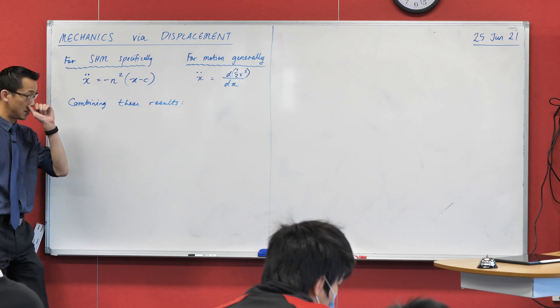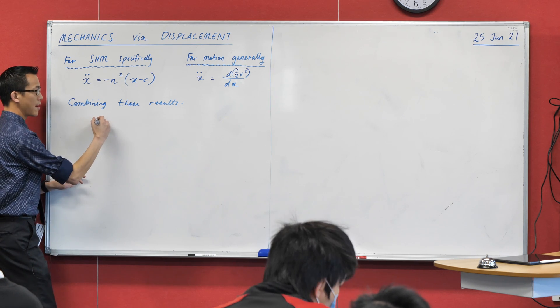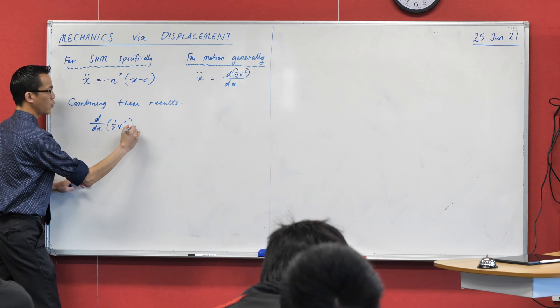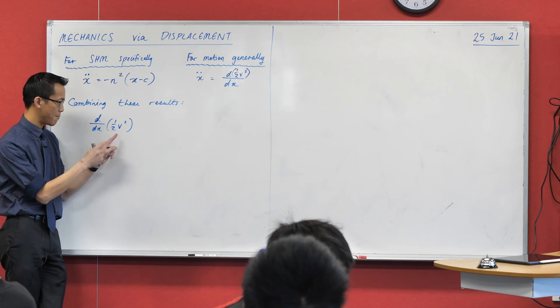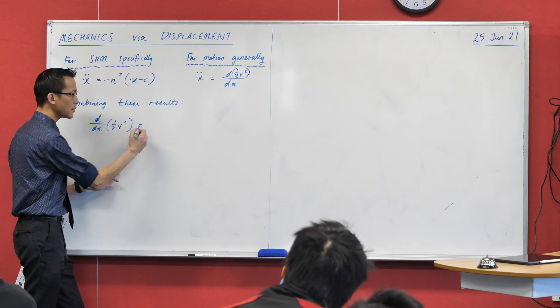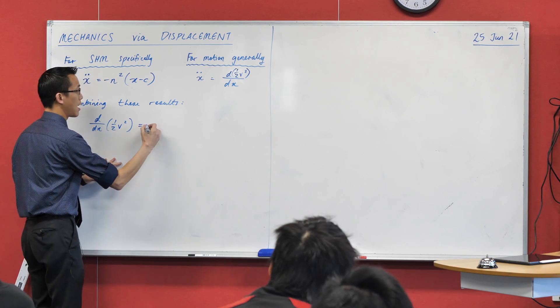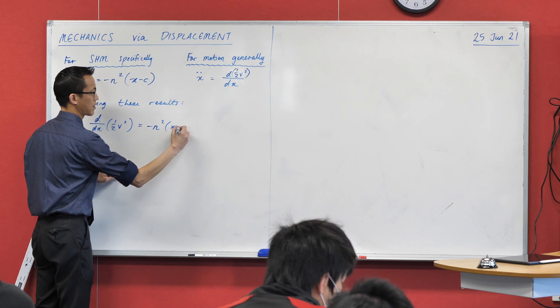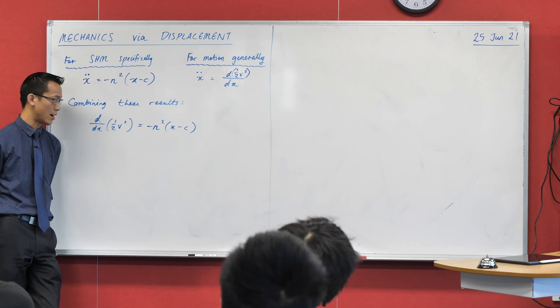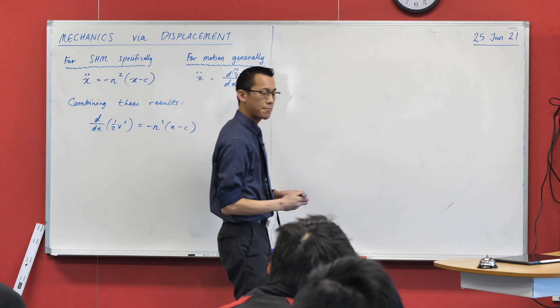What will this help us to see? Well, if I just make a substitution here, and say I've got this derivative of half v squared, and we know it's v's, but I'm picturing v as some function of x, that's why I can differentiate it with respect to x. In simple harmonic motion, it's going to be this. So I'm going to write my minus n squared x minus c, like so.